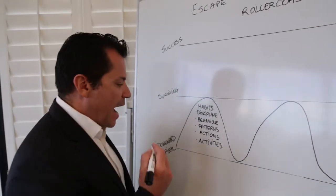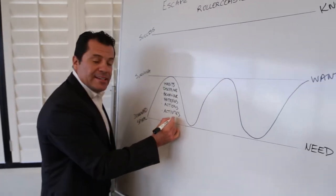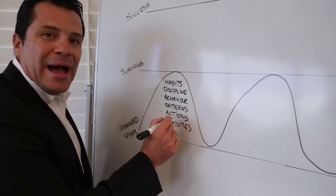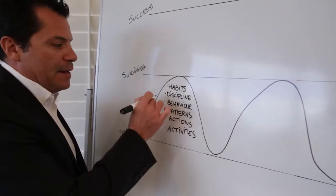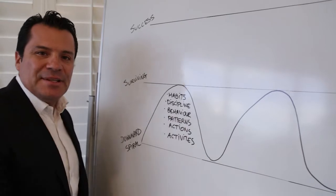And what generally happens is agents tend to go get more activities, create more actions, have some patterns, change their behavior, become more disciplined, and build habits into their business.